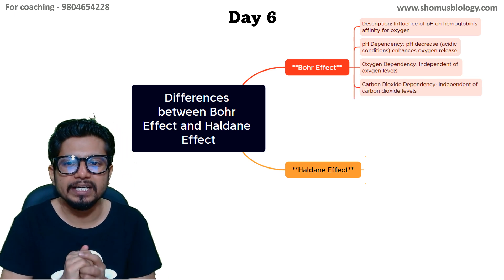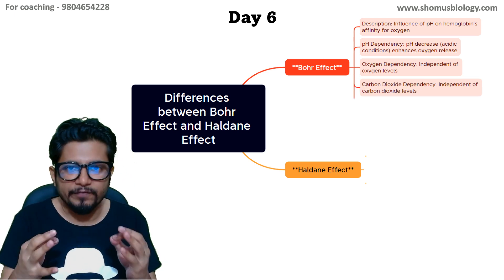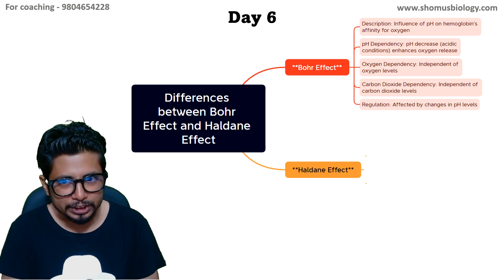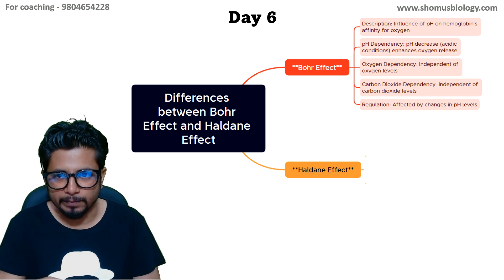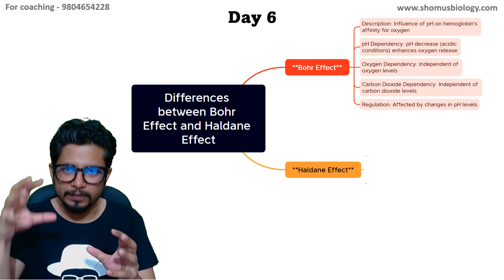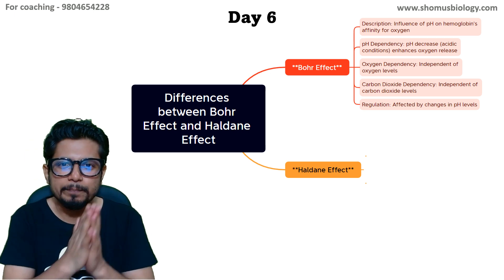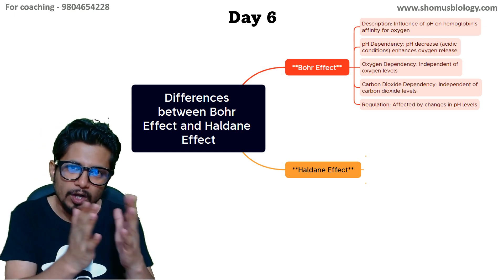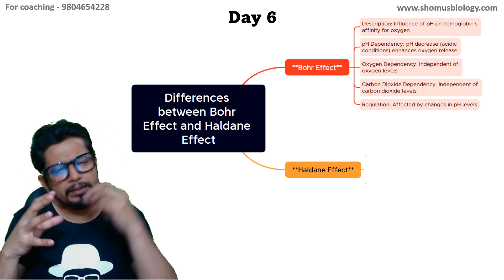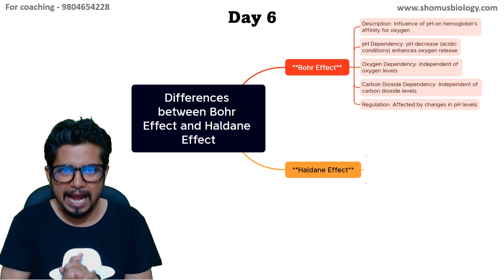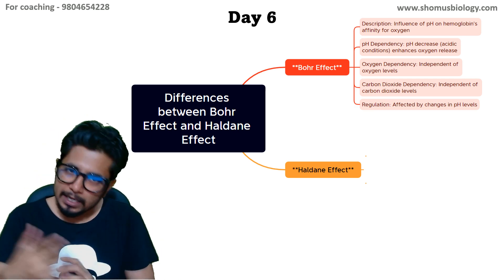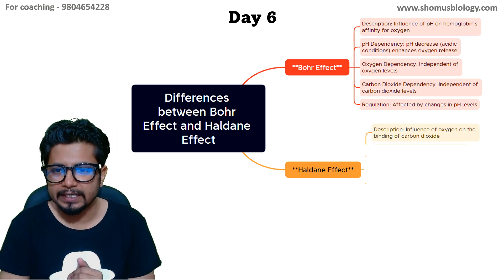The Bohr effect is also independent of carbon dioxide concentration. In terms of regulation, the Bohr effect is affected by changes in pH level only. So it is basically the affinity of hemoglobin towards oxygen in the presence of an acidic or basic environment. If an acidic environment is present, hemoglobin will release oxygen. If a basic environment is present, hemoglobin will stick to oxygen.